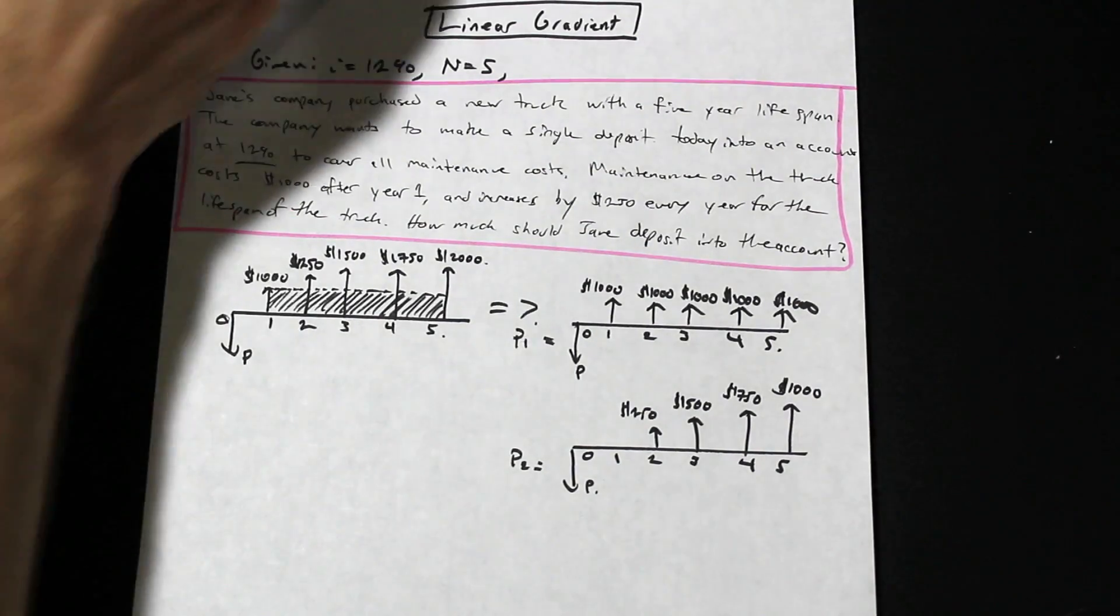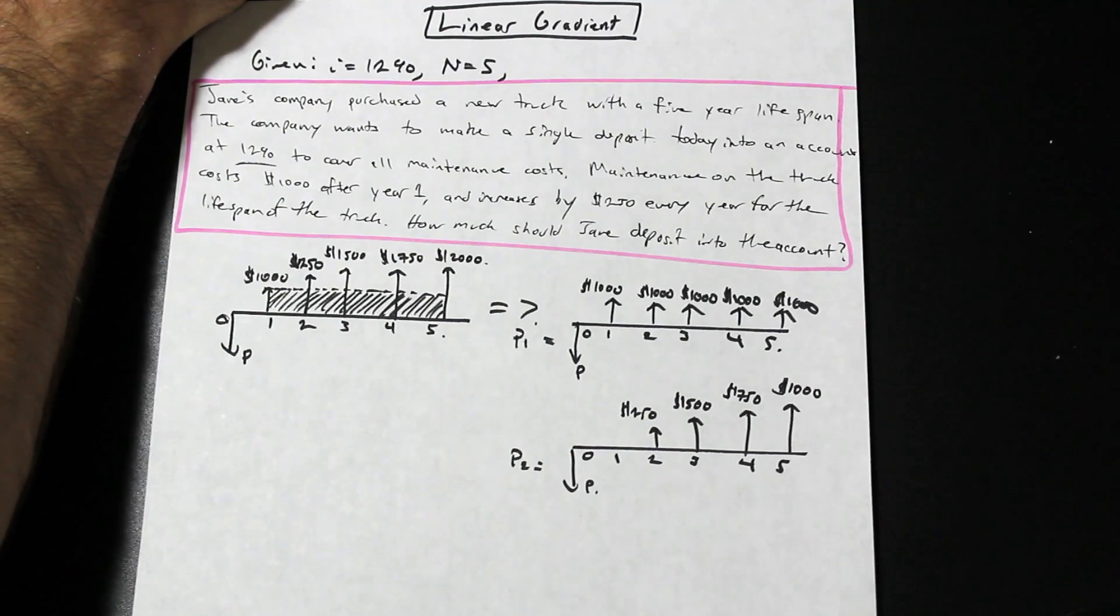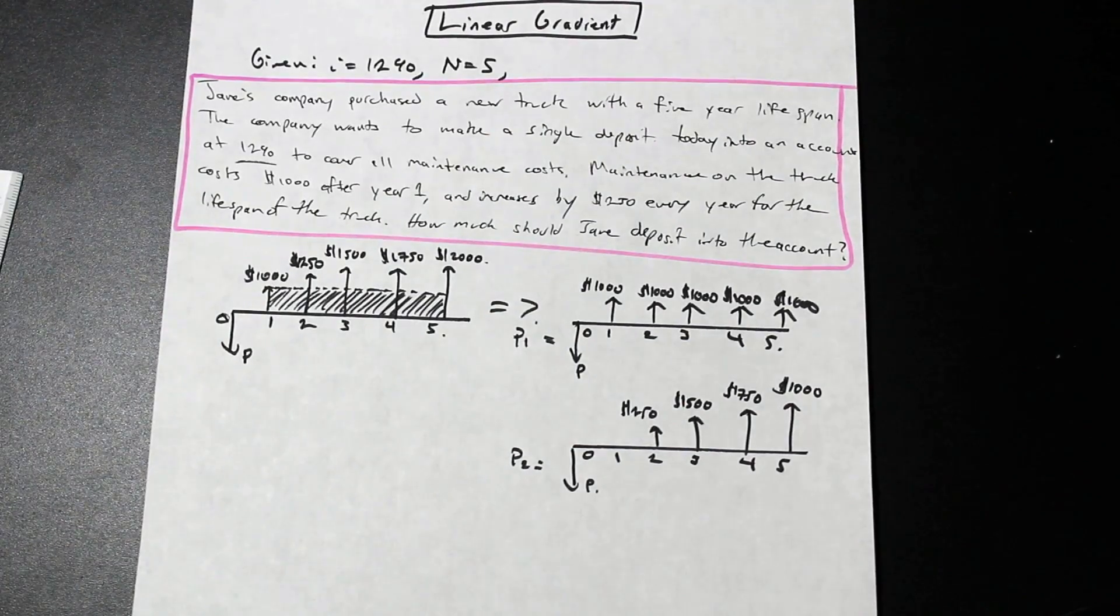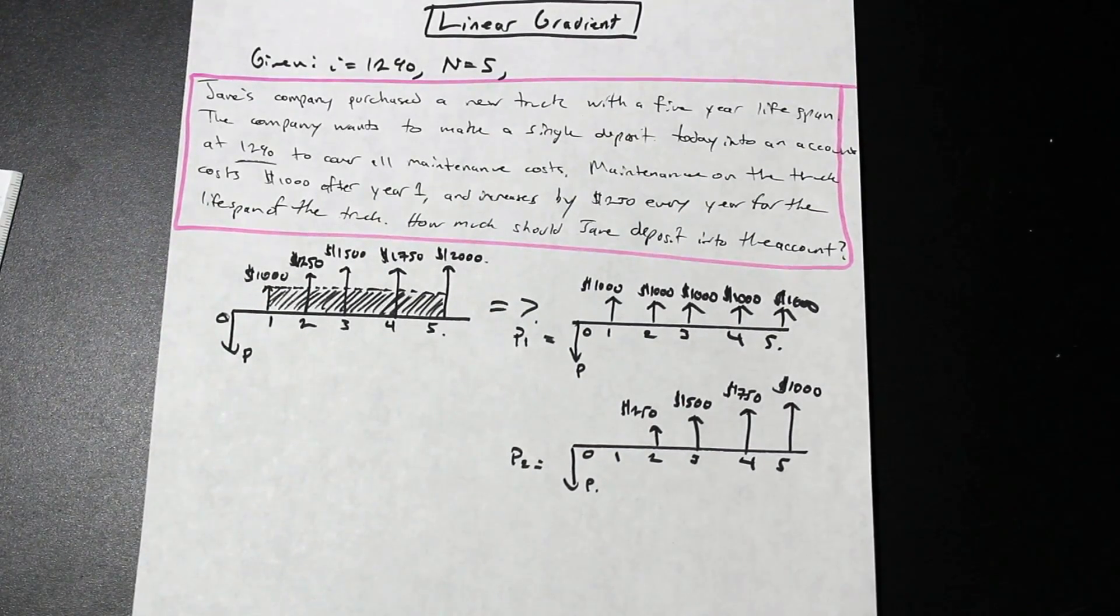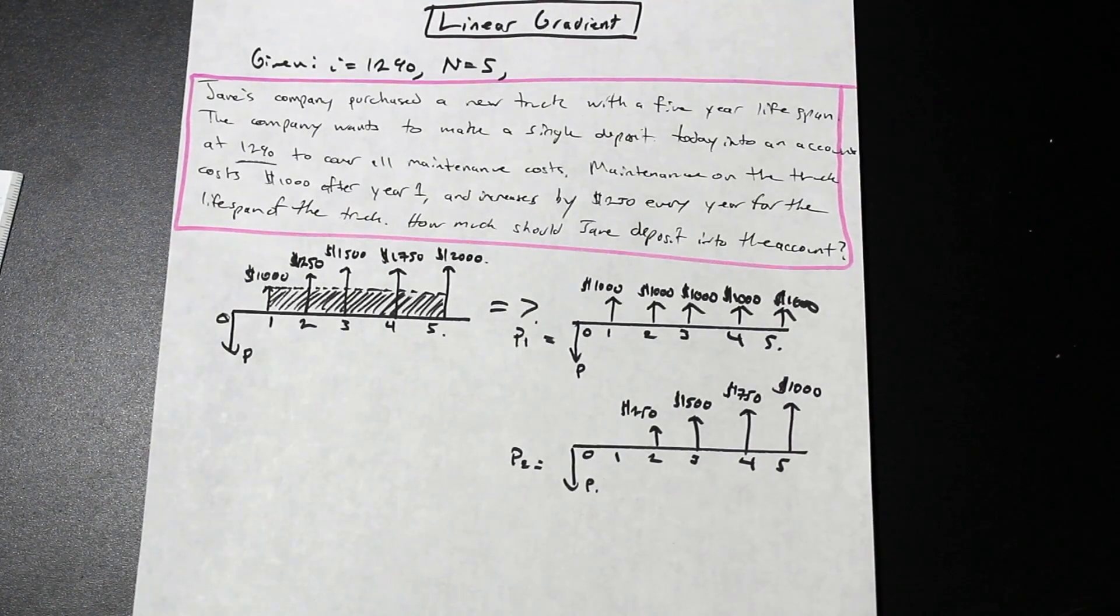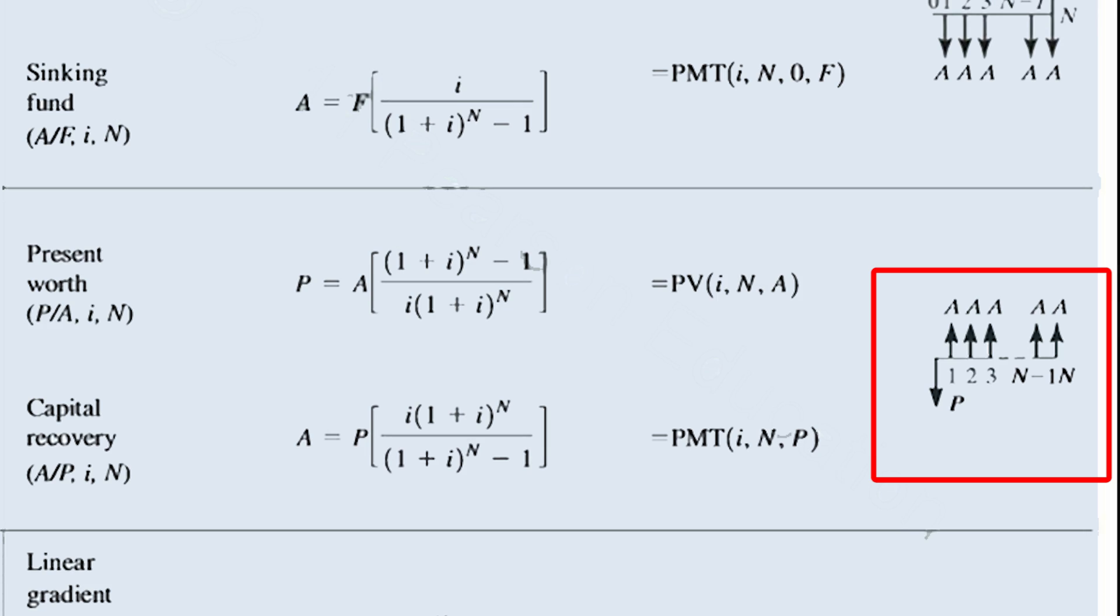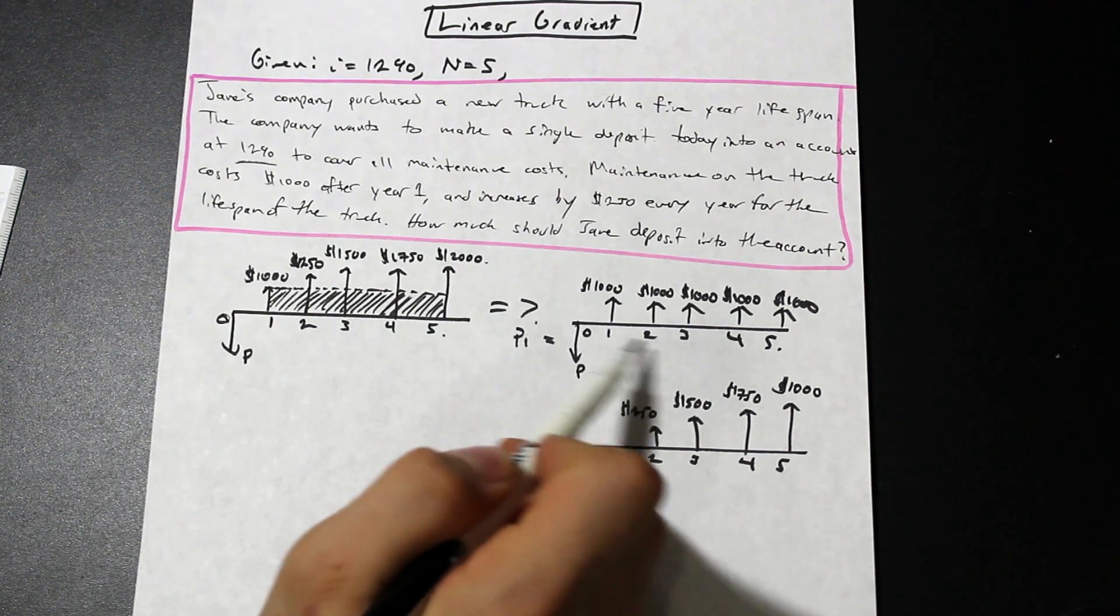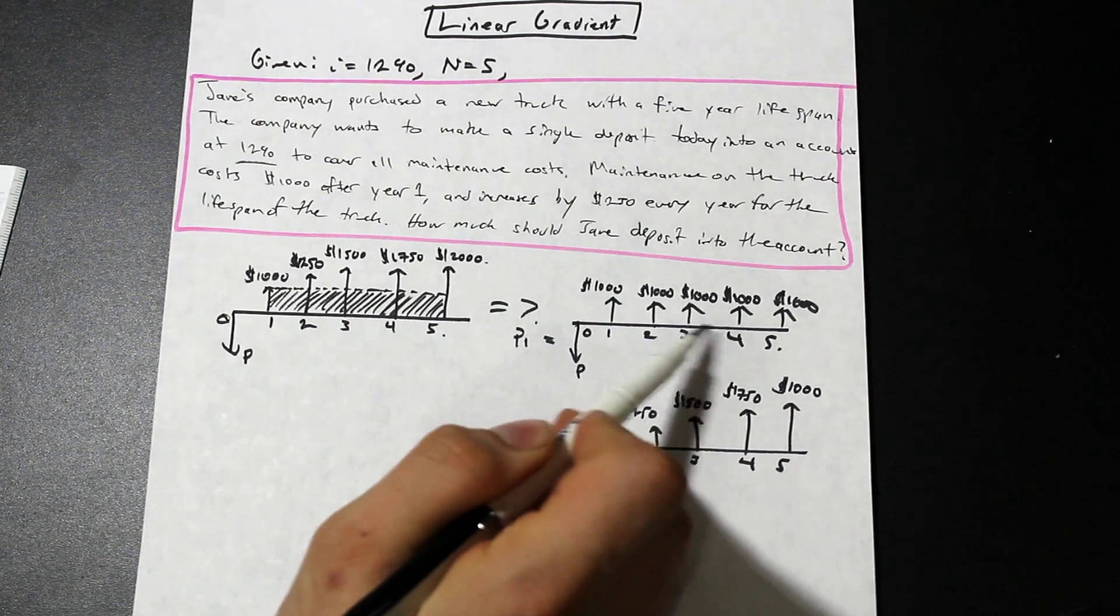So if you take a look on the screen, what I've done is I've put up the formula for what's known as an equal payment series. And what we're looking for is we're looking for P, and we're given A, right? And if you take a look on the right here with the little arrows, you have P and then all the A's. As we can see, the A's start one year after P, which is what we have in our question here for P1. And what is our N? Well, our N is 5, so we go 1, 2, 3, 4, 5.